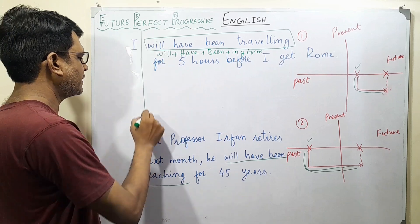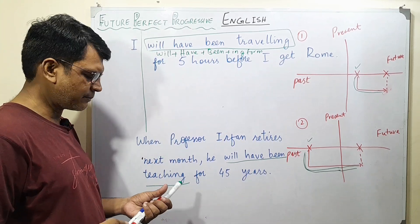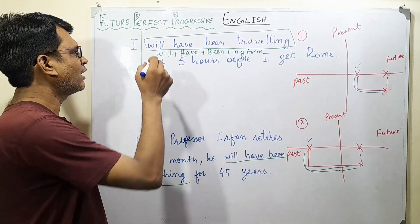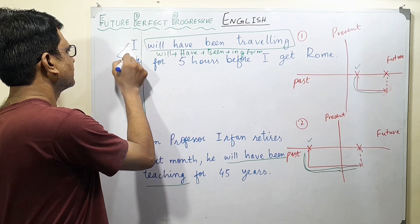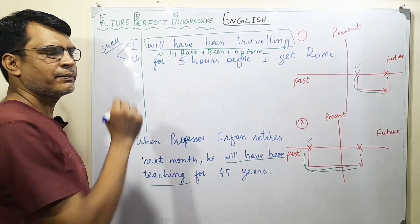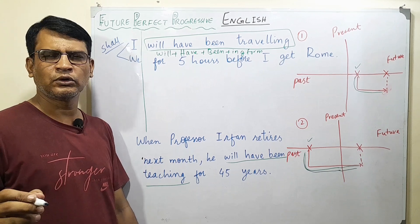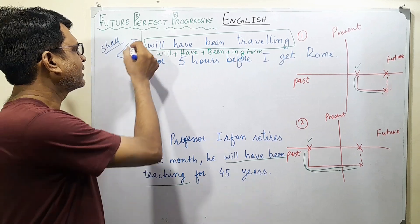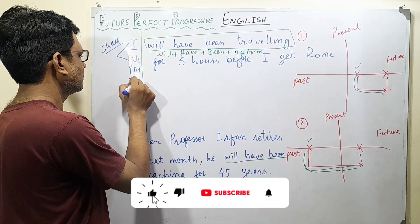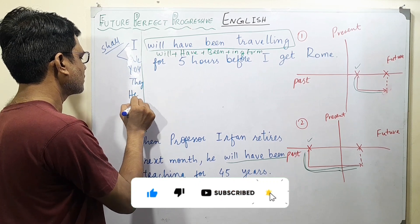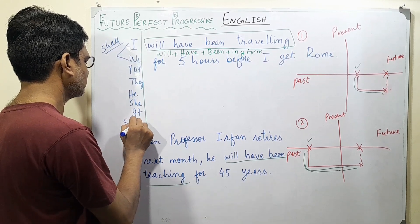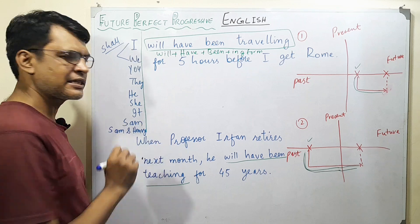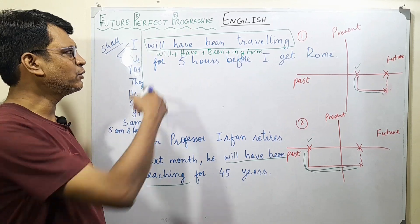All subjects can be used — there is no problem with that. Let me recall the idea of "will" versus "shall." Some people still think that with "I" and "we" we can use "shall" — no worries — but in modern usage we do not use it; we just use "will" only. So whether it is I, we, you, they, he, she, it, or any number of subjects, we will be using the same structure.